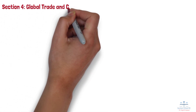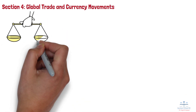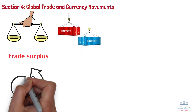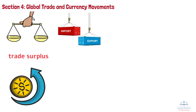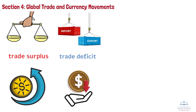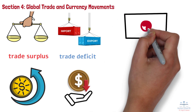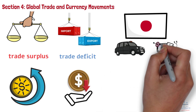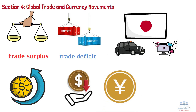Section 4: Global Trade and Currency Movements. The balance of trade between countries plays a significant role in currency fluctuations. Countries that export more than they import, resulting in a trade surplus, typically see their currency rise in value because foreign buyers must purchase that country's currency to pay for goods. Conversely, countries with a trade deficit — meaning they import more than they export — often experience a weakening of their currency, as more of their currency is being sold to buy foreign goods. For example, Japan is known for having a trade surplus due to its high level of exports, particularly in cars and electronics. This increases demand for the Japanese yen, as international buyers need yen to purchase these goods, often leading to a stronger currency.